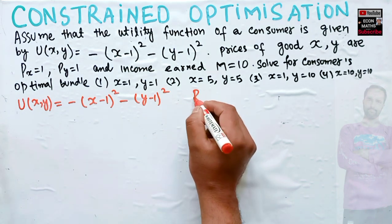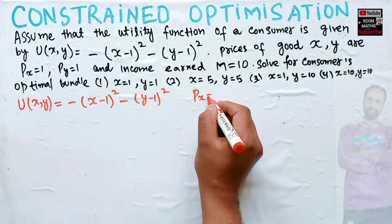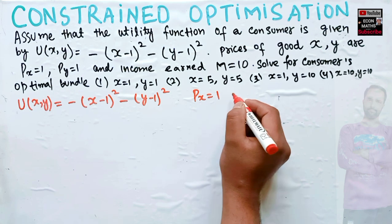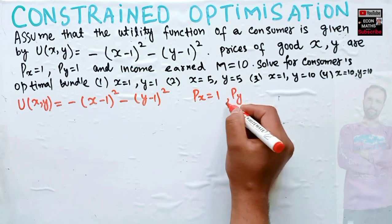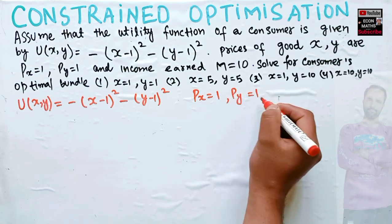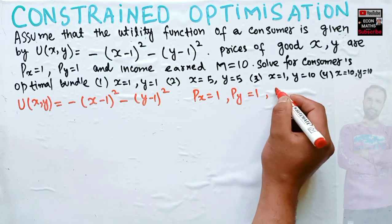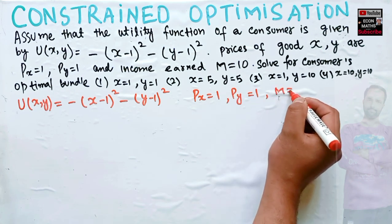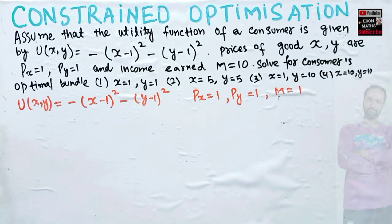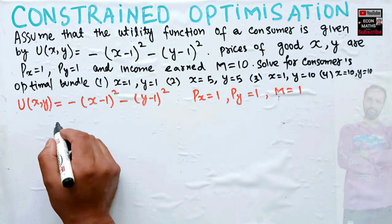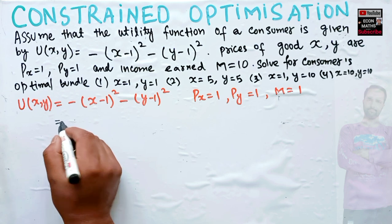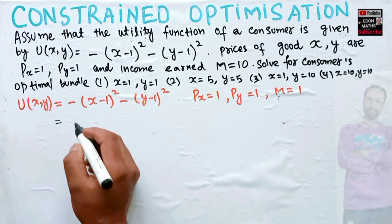Also, price of x = 1, price of y = 1, and income of the consumer m = 10. First, we will rewrite this utility function for the sake of simplicity.